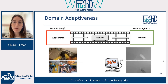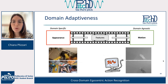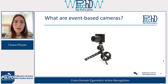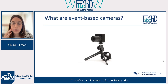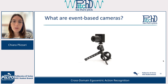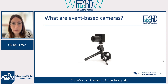There is a problem with motion information: it is very slow to compute because you need to process the entire RGB video to obtain it. So in this second work, we introduce a new device that can be used in egocentric vision to improve cross-domain performance — event-based cameras.